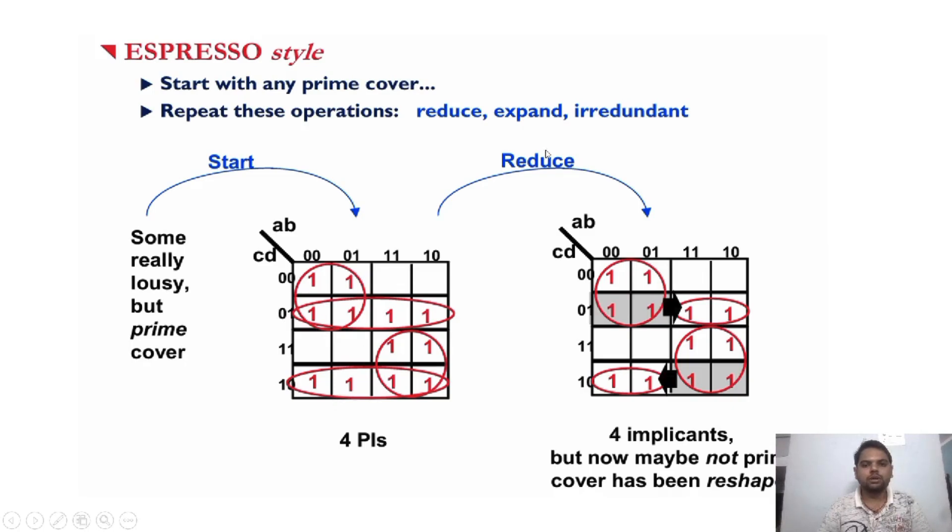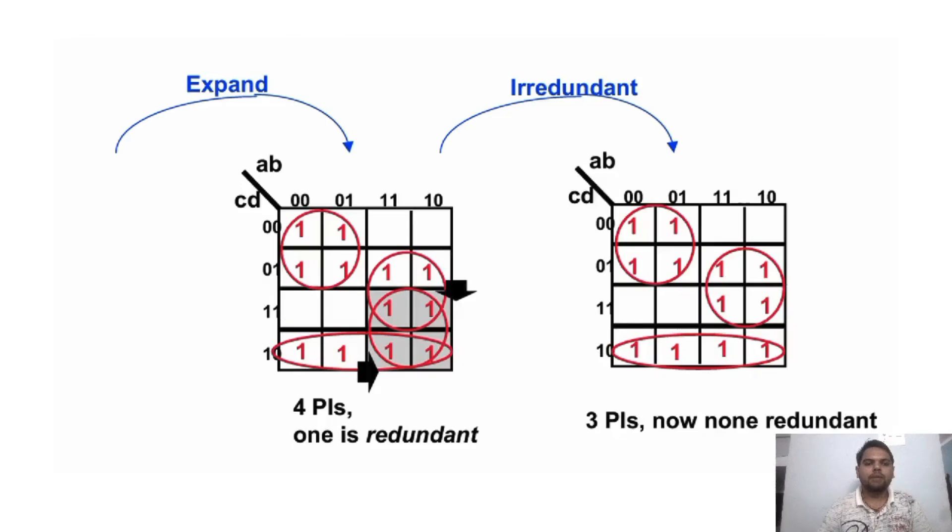Then we do reduce operation. After reducing, we get four implicants, but not all are prime implicants. This one and this one are not prime implicants. Then we do expand operation. After expansion, we get four prime literals, but one is redundant. Then we remove redundant prime literals by doing irredundant operation. After irredundant, we get three prime literals with none of them redundant.